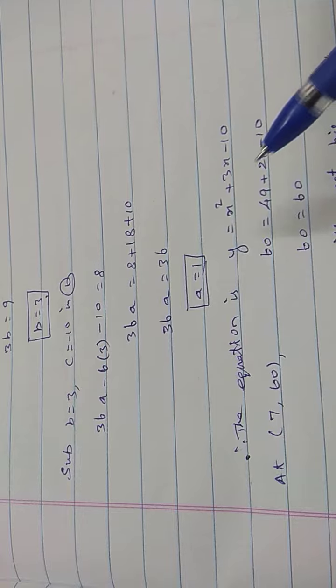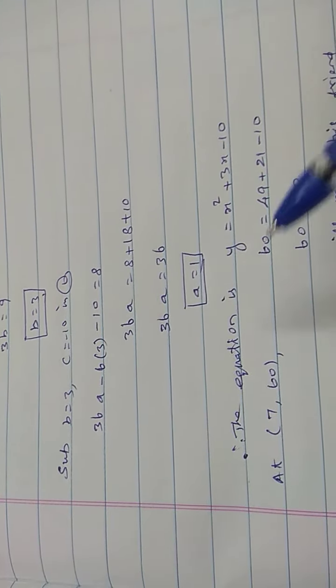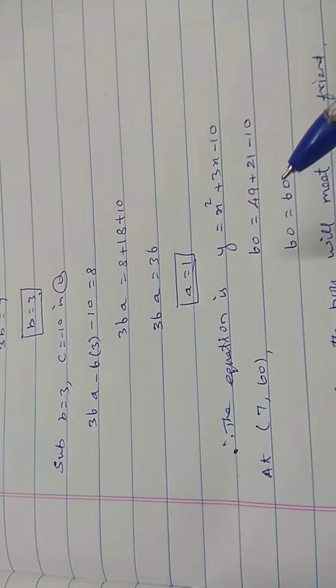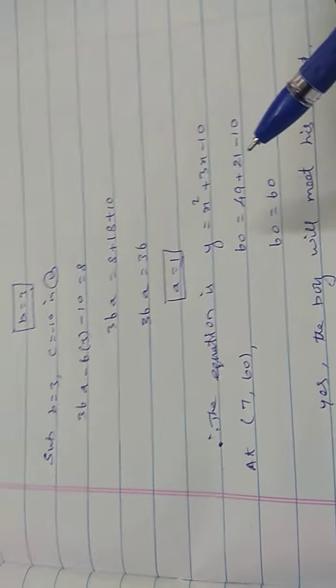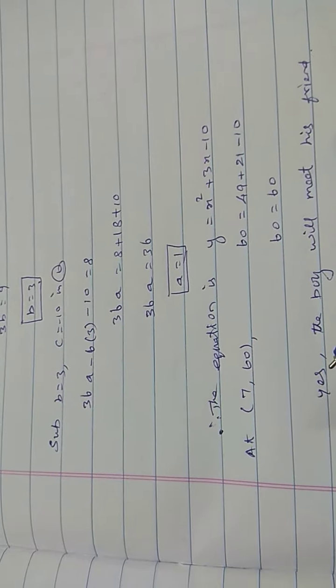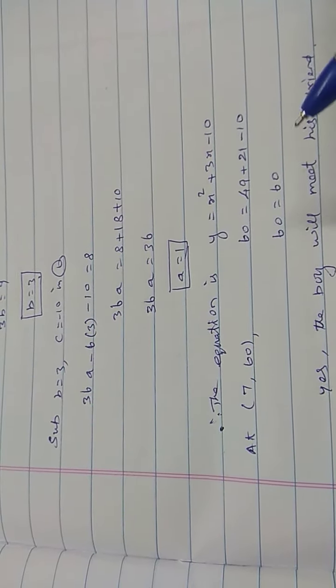49 plus 21 is 70, minus 10 is 60. Y value is 60, 60 equals 60. The boy will meet his friend.